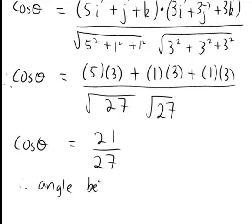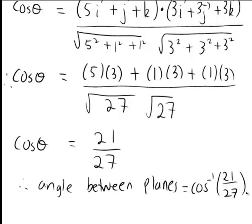Hence the angle between the normals and thus the angle between the planes is just going to be equal to the inverse cosine of 21 divided by 27. And in degrees that works out to be 38.94 degrees. So that is how we find the angle between two planes given their equations.